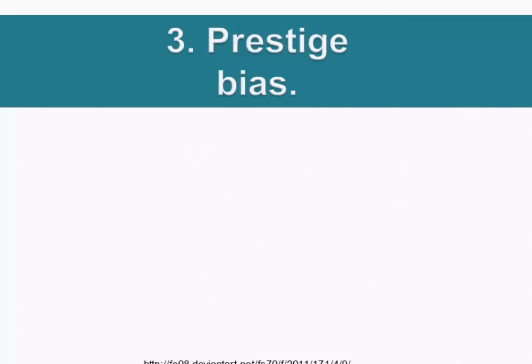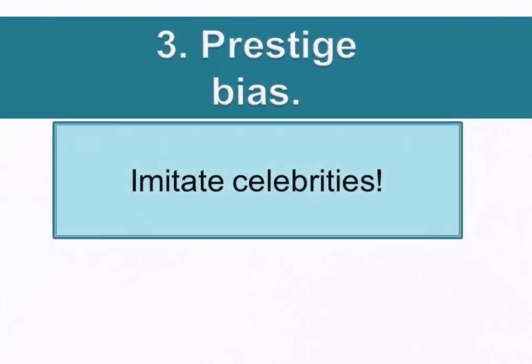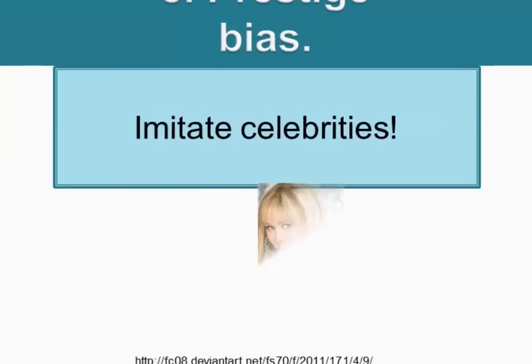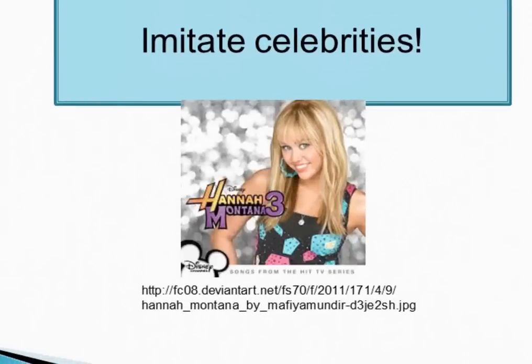The third bias is quite easy to understand. Boyd and Richardson call it 'prestige bias,' which means we imitate people of high status and celebrity. We can certainly see a lot of this in all cultures and in global culture today, with celebrities coming and going at a rapid pace. Parents are often concerned about the prestige bias influencing their children.